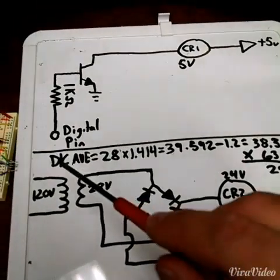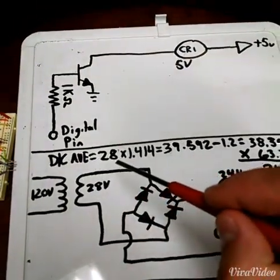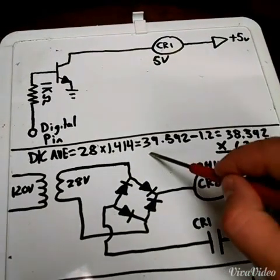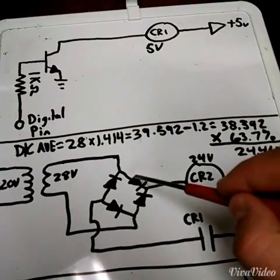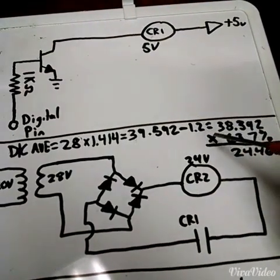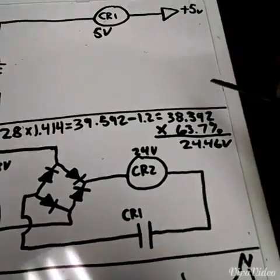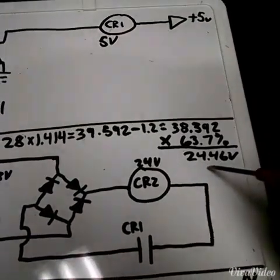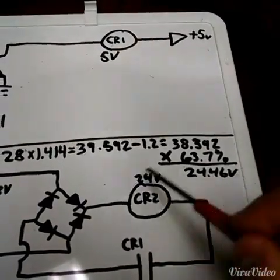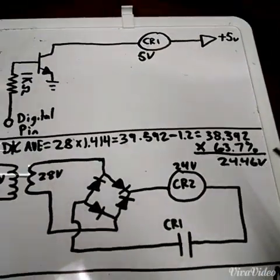And how I calculated this DC average power is 28 the effective voltage times 1.414 to give us our peak voltage. And then minus 1.2 which is just the voltage drop of each diode each half cycle. And then times 63.7% which is just 2 divided by pi. I won't go into where that number comes from. But anyways I came up with 24.46 volts in this circuit.